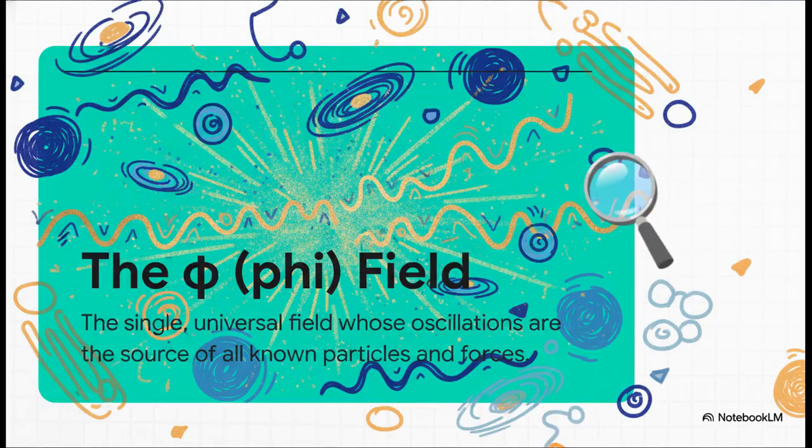So what is this thing that's actually oscillating? The theory proposes that everything, and I mean everything, comes from one single source, a universal field it calls the phi field. A good way to picture it is to think of the ocean. The phi field is the ocean. It's the one thing that's literally everywhere. And all the stuff we experience, gravity, light, matter, it's all just different kinds of waves and ripples in that one single ocean.